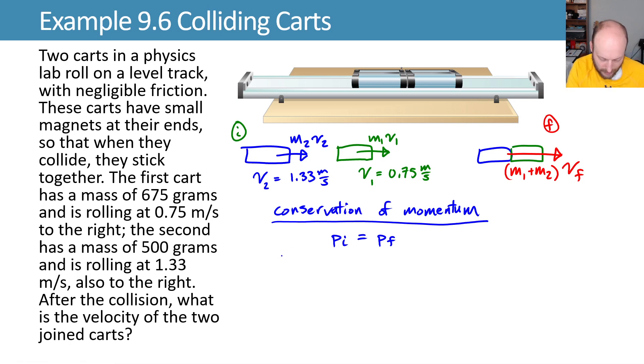We can then write my initial momentum is m2 v2 plus m1 v1 is equal to my final momentum, the combination of those masses times v final.